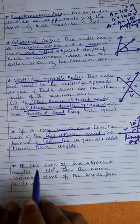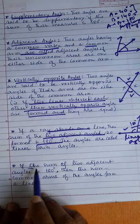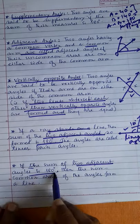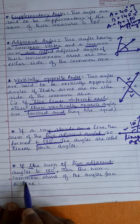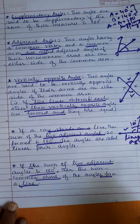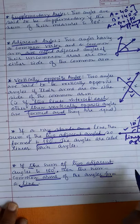Last point: if the sum of two adjacent angles is 180 degrees, then the non-common arms of the angles form a line. Same concept as linear pair.